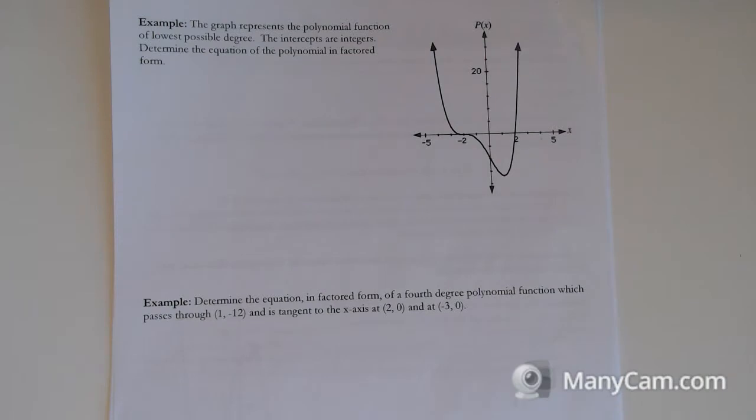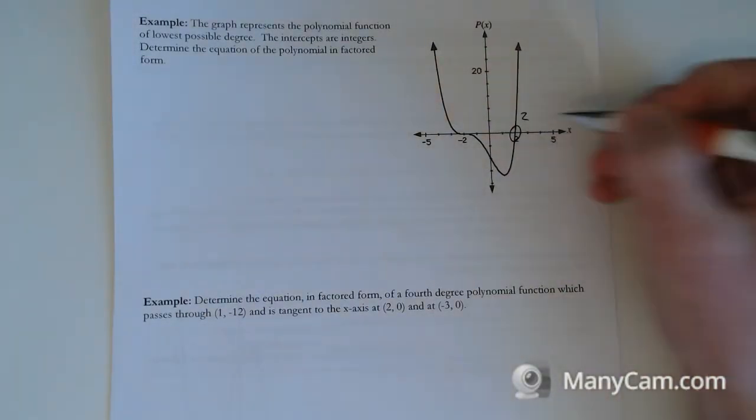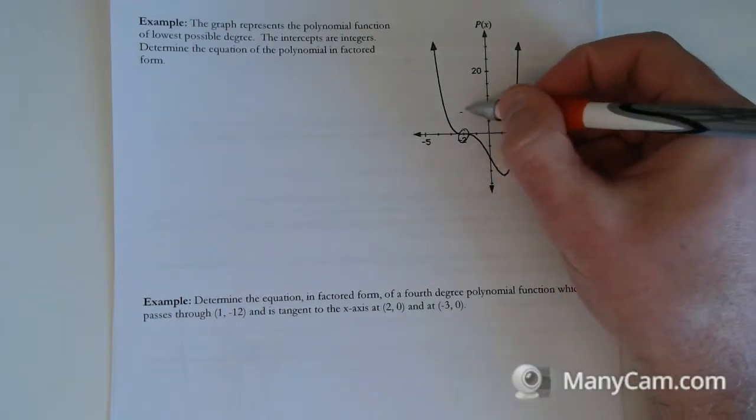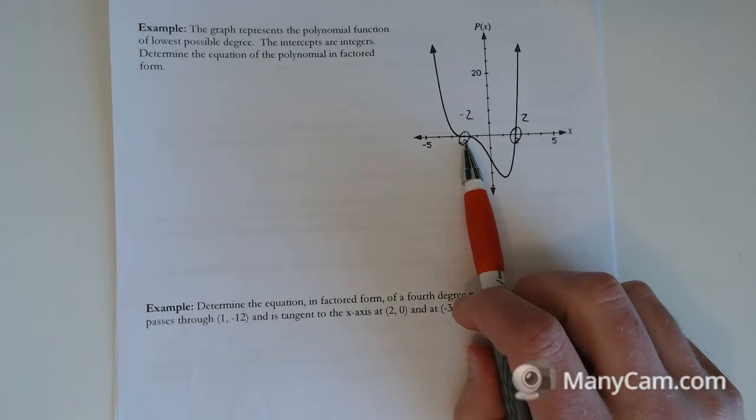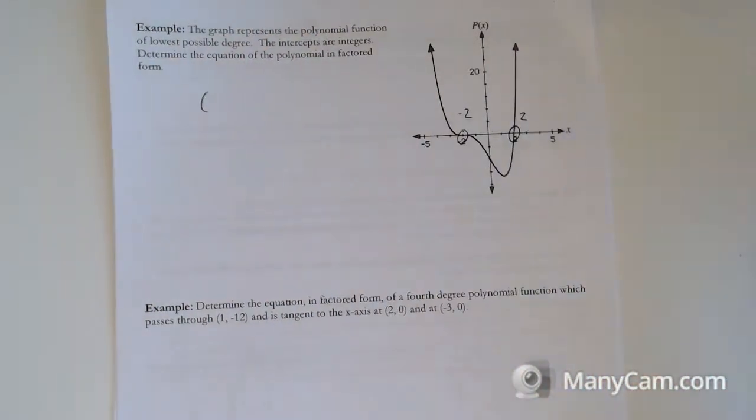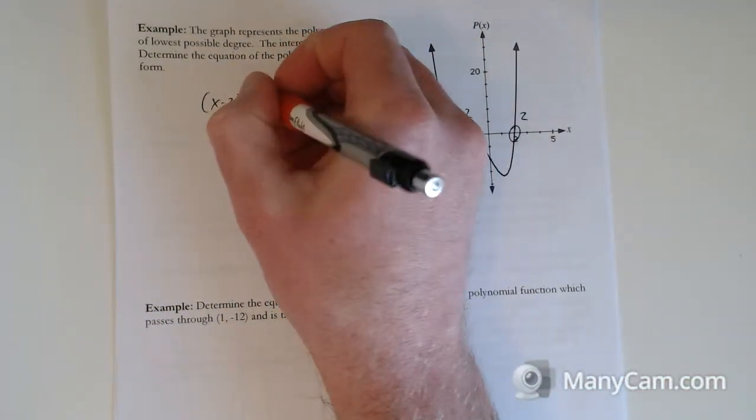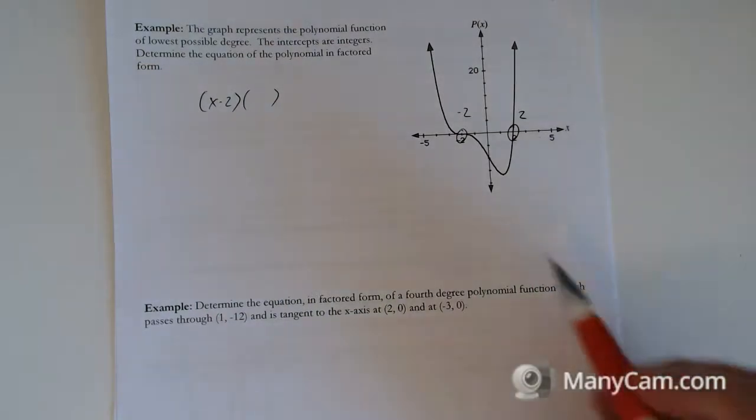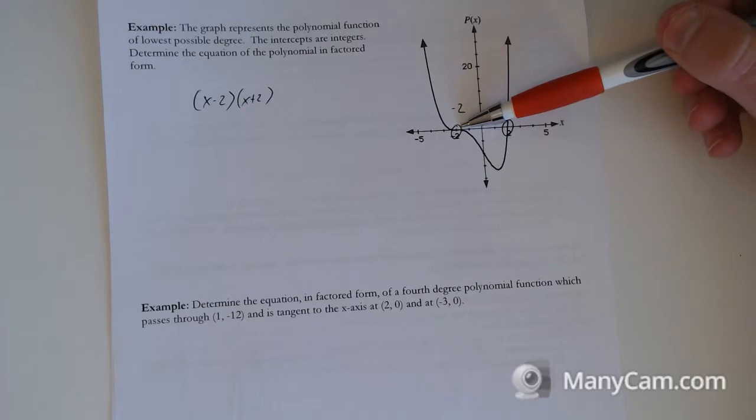The graph represents the polynomial function of the lowest possible degree. The intercepts are integers, determine the equation. So we have an intercept right here at positive 2. We have an intercept right here at negative 2. And this guy right here is going to be of a higher degree.